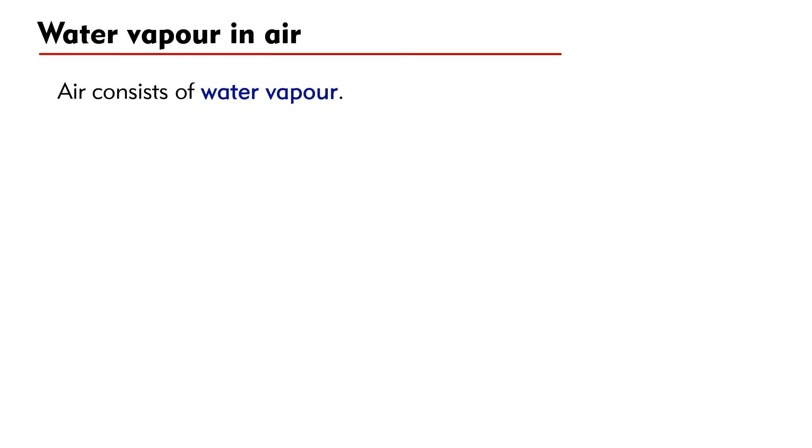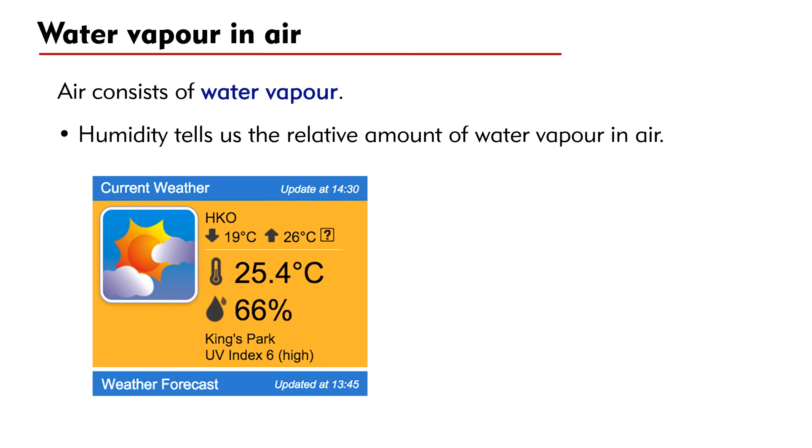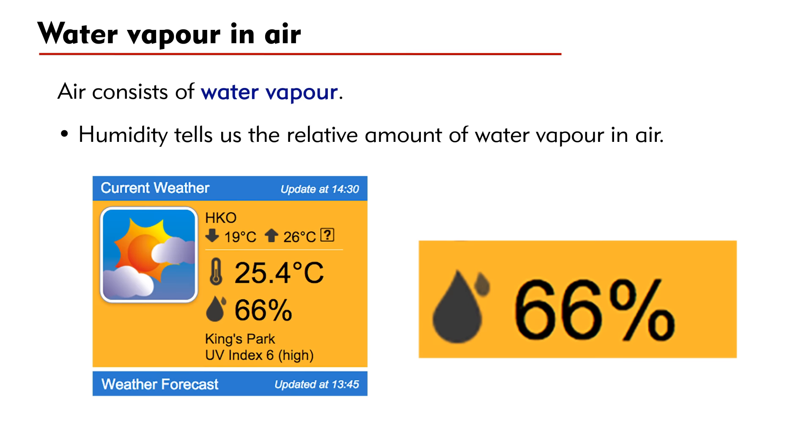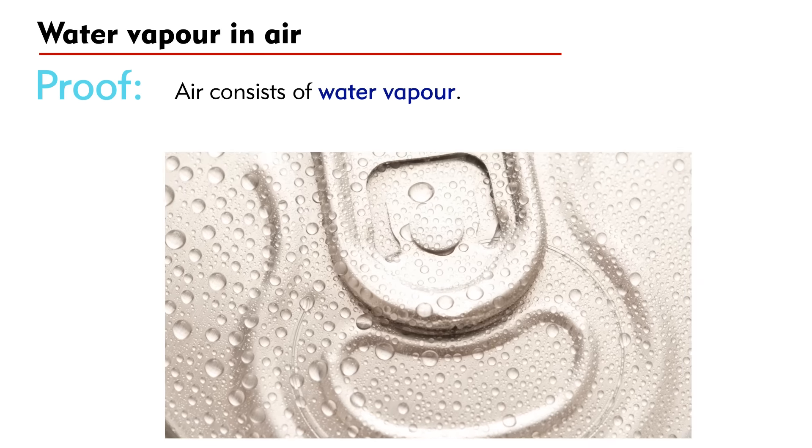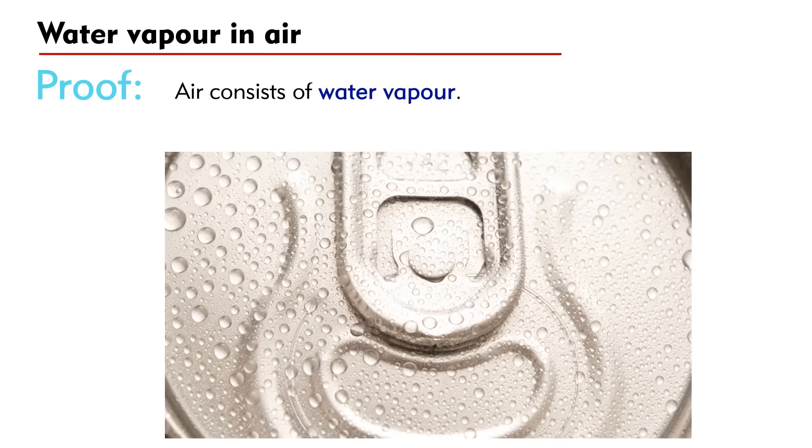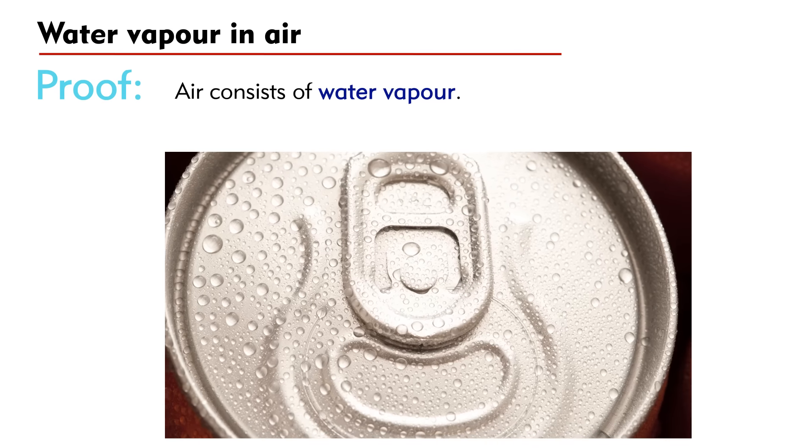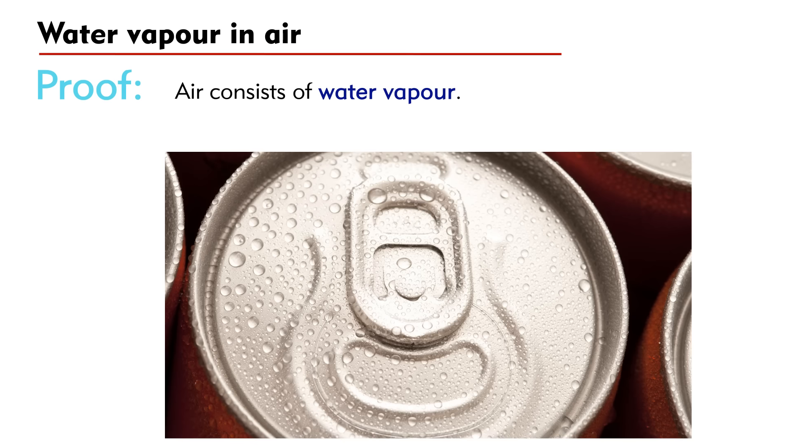We know that air consists of water vapor. For example, humidity is often mentioned in weather reports to tell us the relative amount of water vapor in air. Can you prove experimentally that there is water vapor in air? The simple answer to this question is that water drops will form on the surface of a can of cold soft drink. The water drops result from condensation of water vapor in air. When water vapor is cooled, it will condense into liquid water.